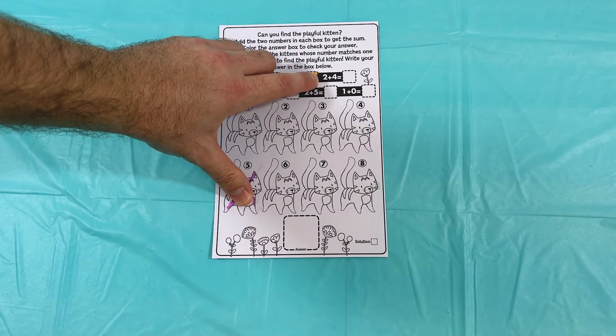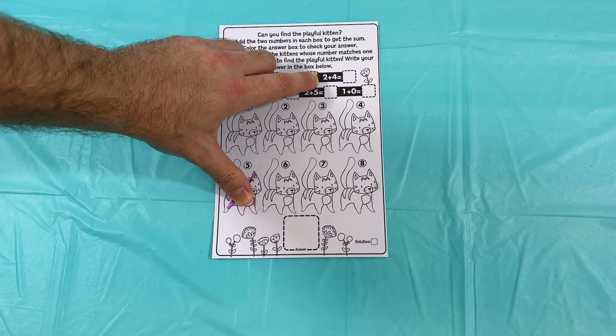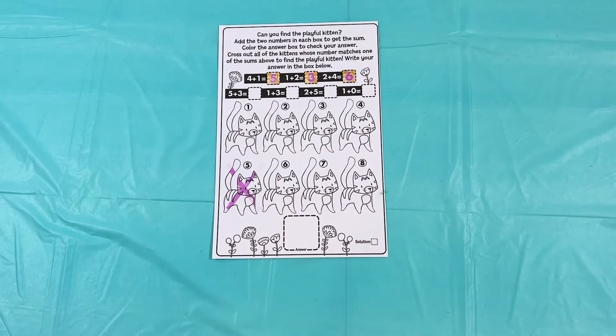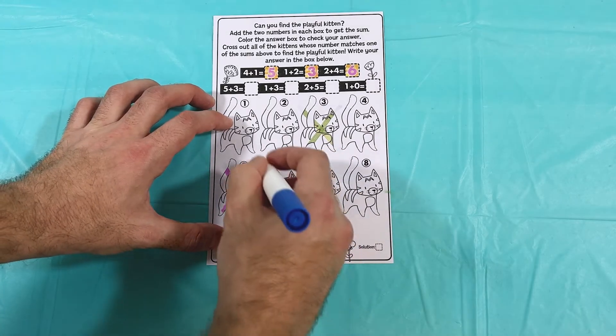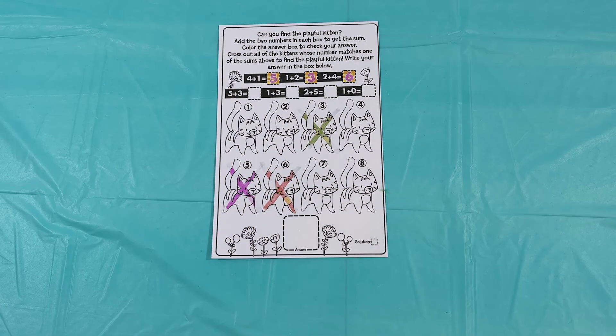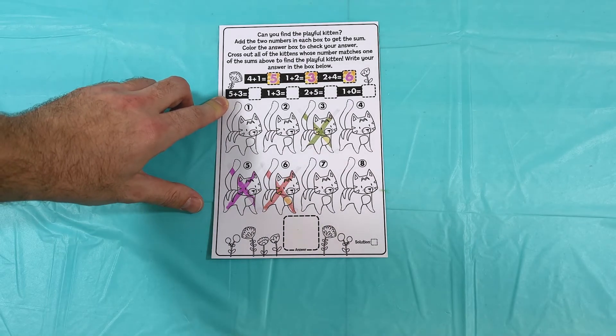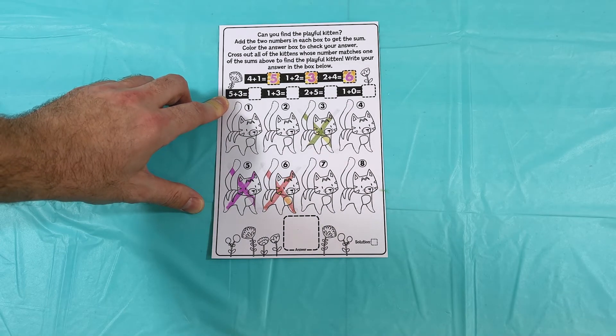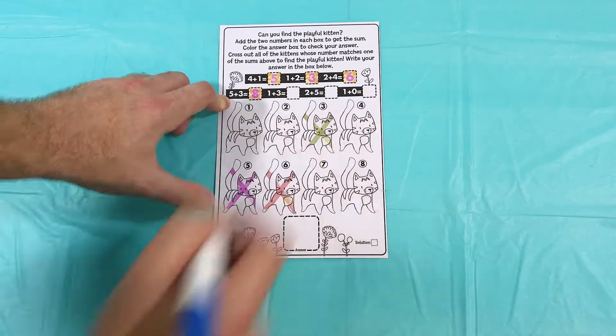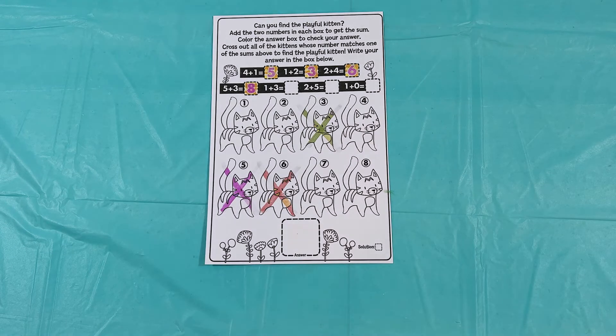Next we have two plus four. That's right, it's six. All right. Our next problem is five plus three. That's right, it's eight. Great job. You were really good at this. Okay. Now we're going to cross out cat number eight.